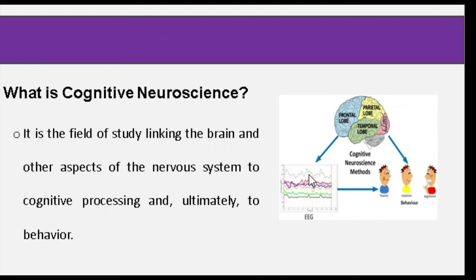First, we have to tackle what is cognitive neuroscience. It is the field of studies linking the brain and other aspects of the nervous system to cognitive processing and ultimately to behavior. We need to say that the behavior or attitude of a person or animal is somehow related or connected with how the brain works.